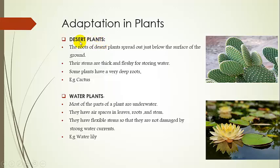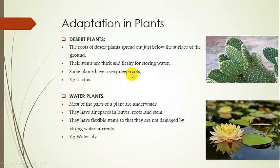If we talk about plants, the following plants are recognized. Number one is desert plants. As you all know, the desert is a dry place with very low rainfall, so they have to conserve more water. The roots of desert plants spread out just below the surface of the ground. Their stems are thick and fleshy for storing water, and these plants have a very deep root system.